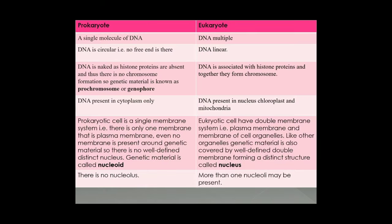So the point is that DNA in prokaryotic cells is naked — there are no histone proteins; histone proteins are absent. There is no chromosome. The formation of genetic material is called a prochromosome — a structure present before the presence of a chromosome. It is also known as a genophore. Genophore means a gene-bearing structure which is not a nucleus.